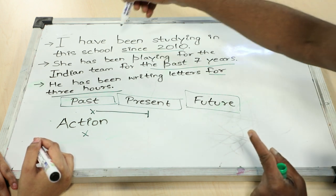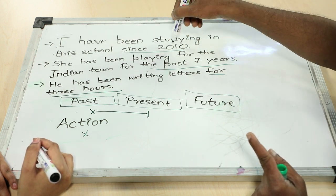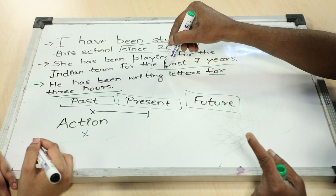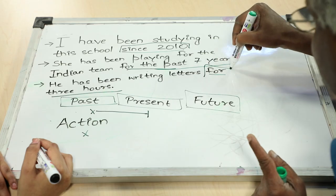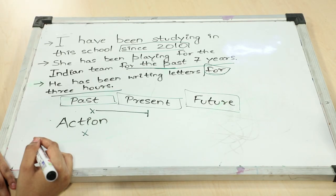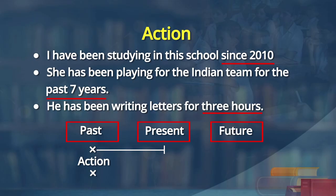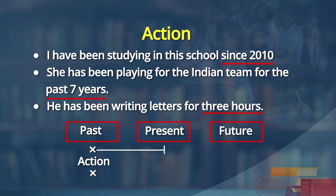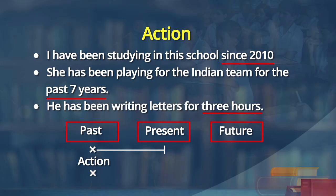The verb forms are: have been studying, has been playing — and the other catch words are 'since' and 'for the past,' referring to a duration. The duration began in the past and continues till now. Learners, we have demonstrated on the board with a visual image of past, present, and future time. Present perfect continuous — an action which began in the past and still continues. I have been studying in this school since 2010 actually means: I started in 2010 and am continuing still now.